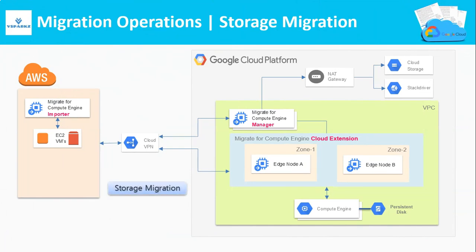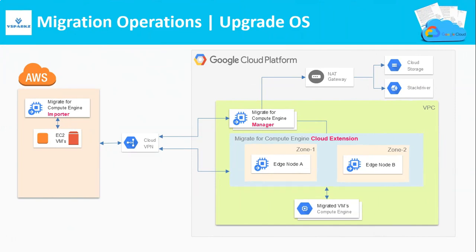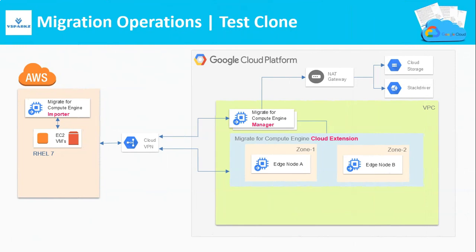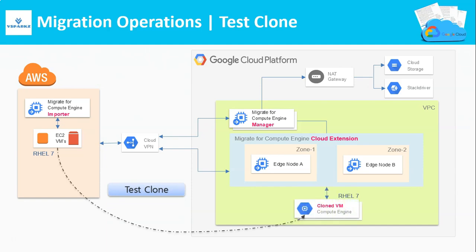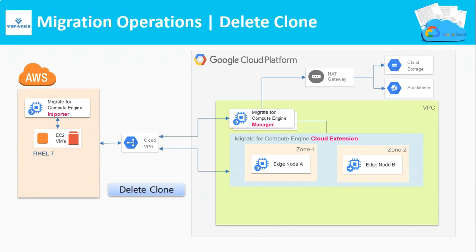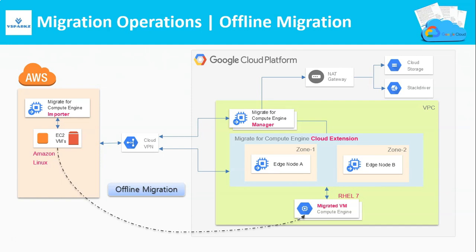Storage migration copies only the source VM storage data into a disk on the compute engine. The upgrade OS operation will upgrade your OS during the migration. In the test clone operation, Migrate for Compute Engine clones the VM from the source platform and moves the cloned VMs as Compute Engine VMs for testing. In this scenario, the source VM is not removed or deleted, and any changes made to the data in the test clone are not replicated back to your live source systems. The test clone is then removed from Google Cloud. With an offline migration operation, Migrate for Compute Engine enables you to migrate workloads running with operating systems that are not supported by Migrate for Compute Engine's streaming technology.